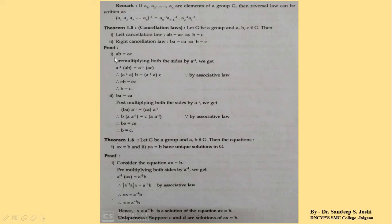Proof of left cancellation law: given AB = AC. Pre-multiplying both sides by A inverse: A inverse · AB = A inverse · AC. By associative law: (A inverse · A) · B = (A inverse · A) · C. By definition of inverse, A inverse · A = E. So E·B = E·C, which gives B = C.